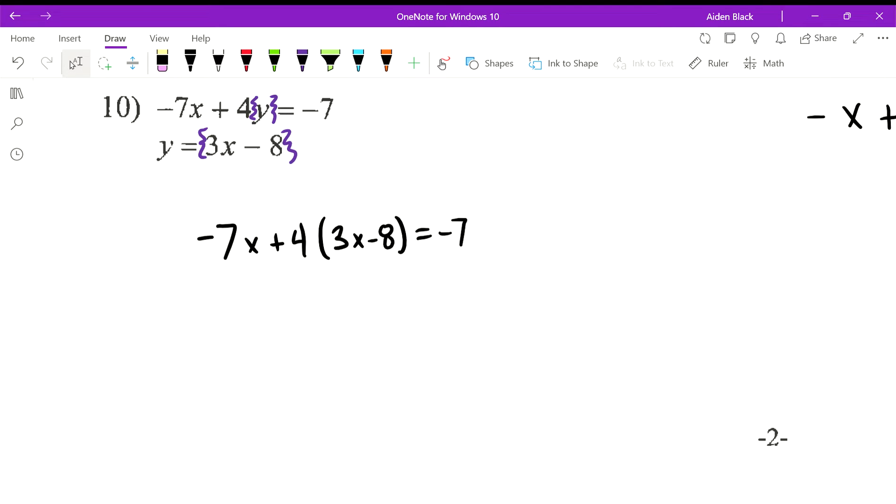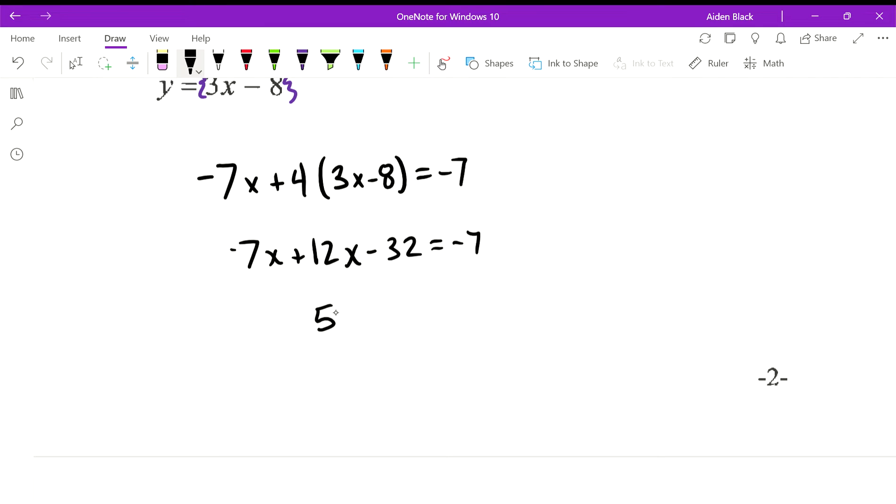Now we have to distribute, combine like terms. We add 32 to both sides. This should be 7 less than 32, which is 25, so we get x equals 5.